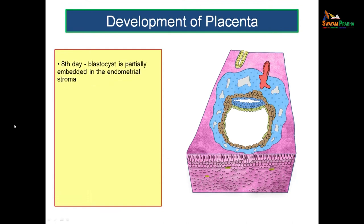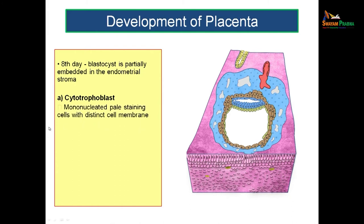By around day 8, the blastocyst is partially embedded in the endometrial stroma. The trophoblast layer differentiates into cytotrophoblast and syncytiotrophoblast. The cytotrophoblast consists of mononucleated, pale-staining cells with distinct cell membranes that are mitotically active, giving rise to cells which populate the syncytiotrophoblast region.